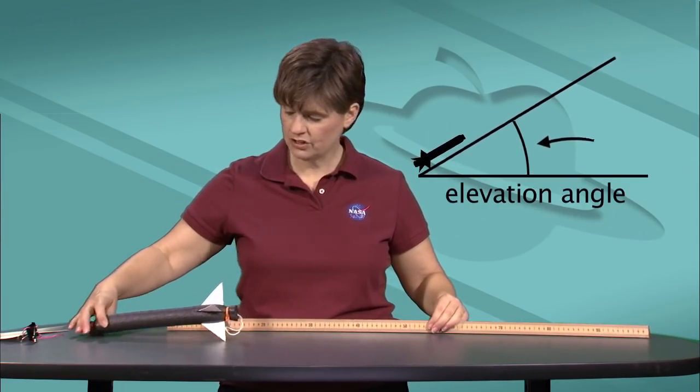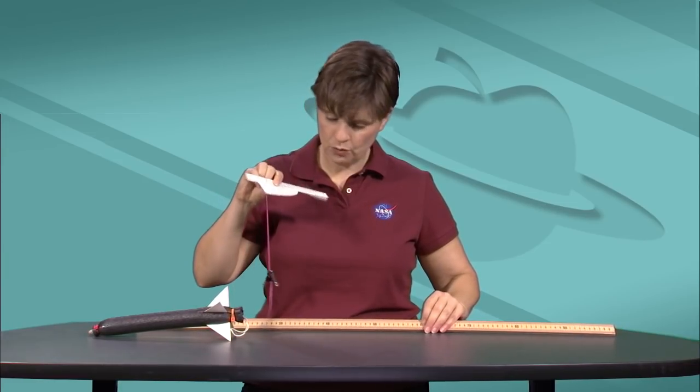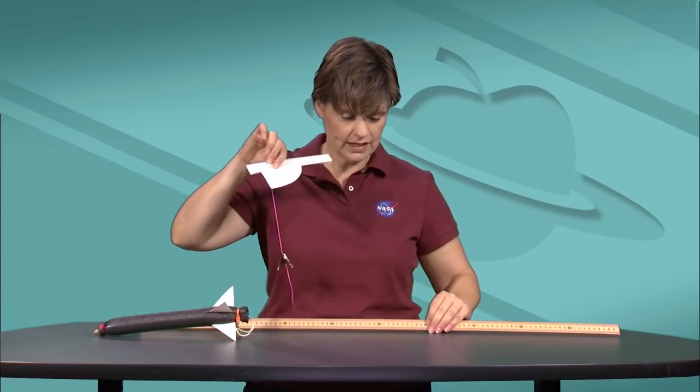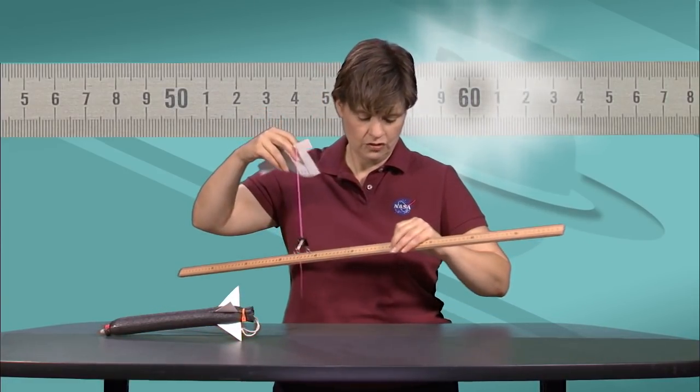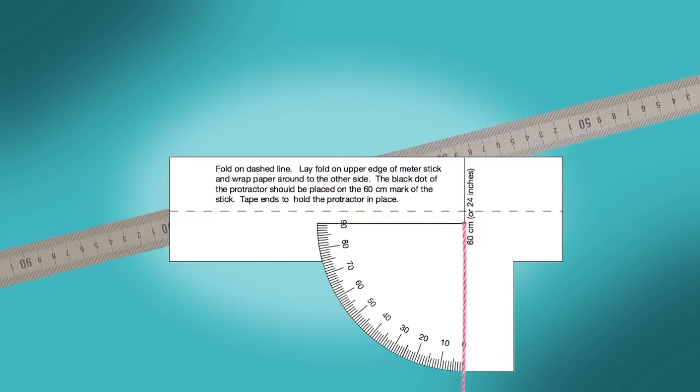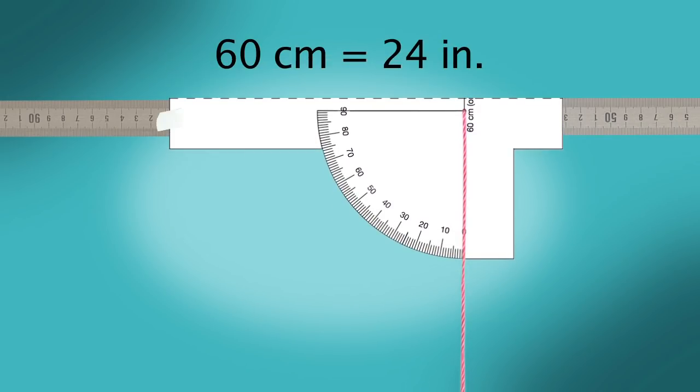So that we can measure the elevation angle we're launching at, we will use our elevation meter. And that is going to be attached with the line indicated on the meter at 60 centimeters. So align the plumb line up with 60 centimeters. Then we'll tape it on with a little bit of tape.